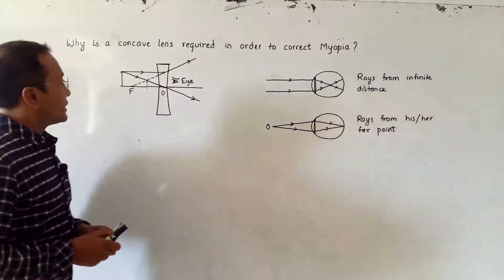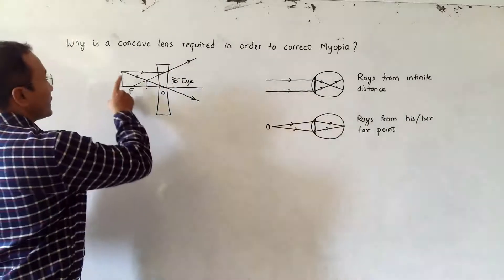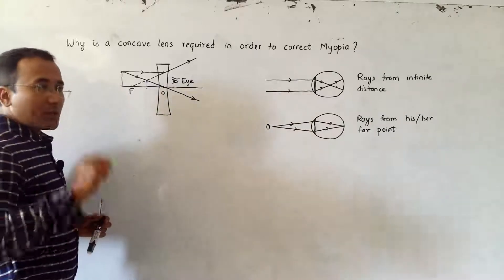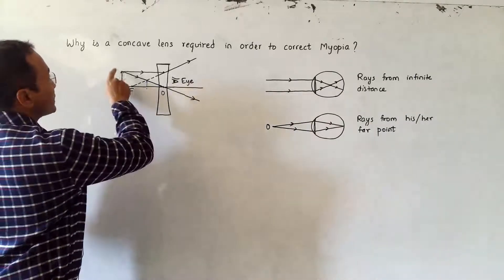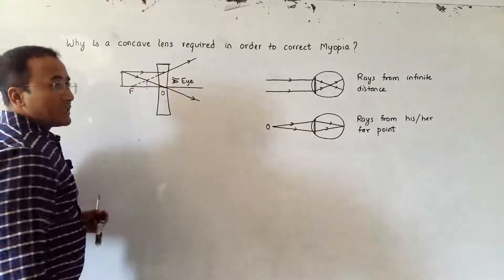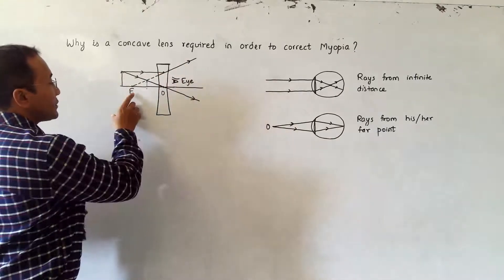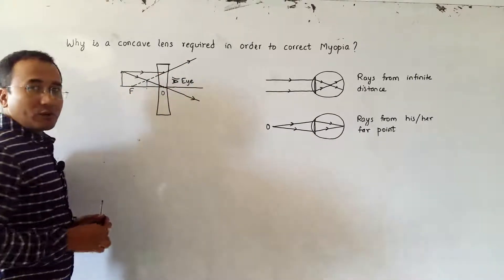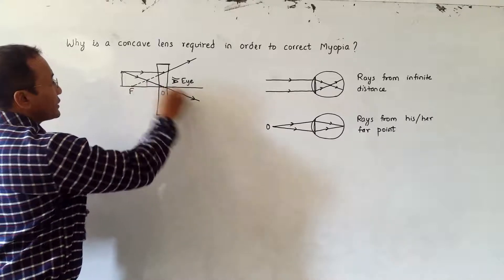In a concave lens, as you see here, there are two light rays. One is coming parallel to the principal axis which diverges in such a way that it appears as if it's coming from the focus. And the other is going through the optical center, so it goes without deviation.